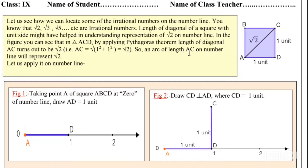In the figure, you can see triangle ACD. By applying Pythagoras' theorem, the length of diagonal AC turns out to be √2. So the diagonal AC will become √2.